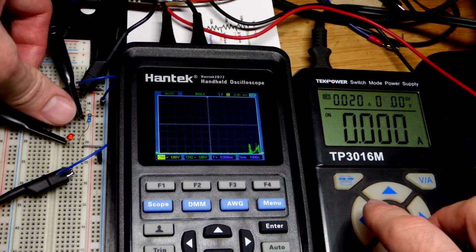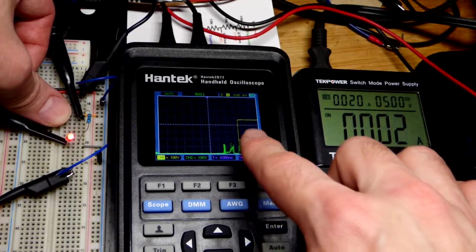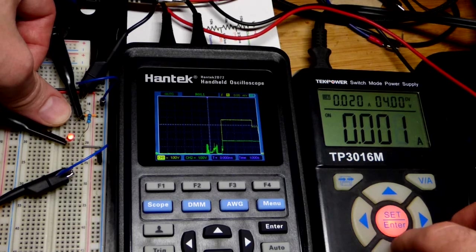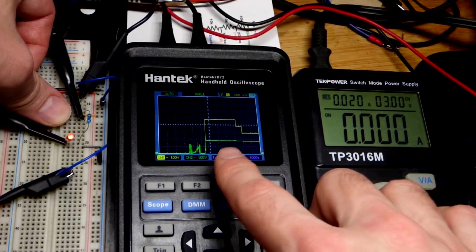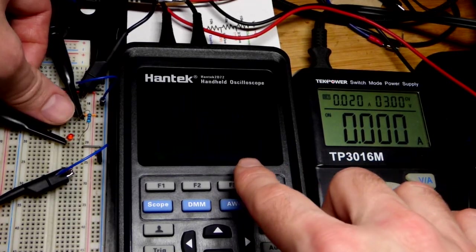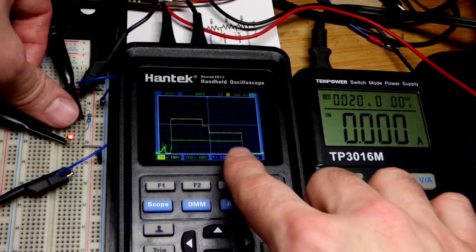Again we have five volts from the power supply - two across the LED, three across the resistor. As we drop the voltage, the voltage across the LED holds steady at two volts.